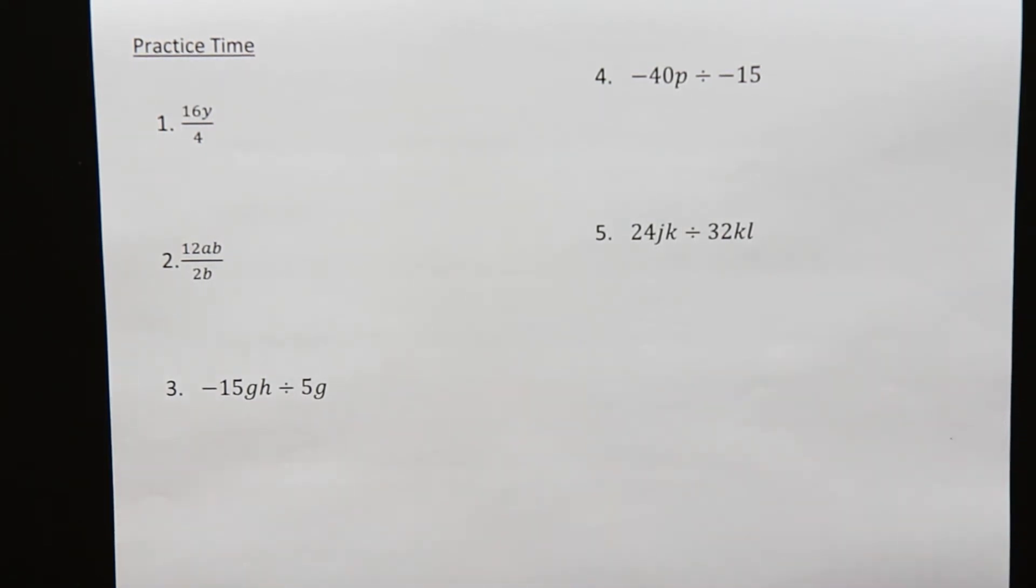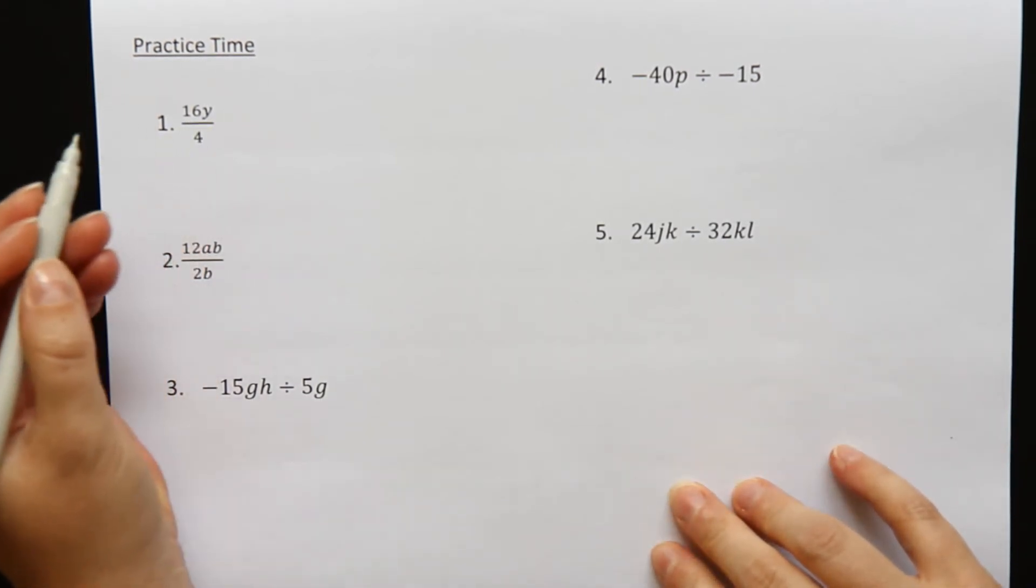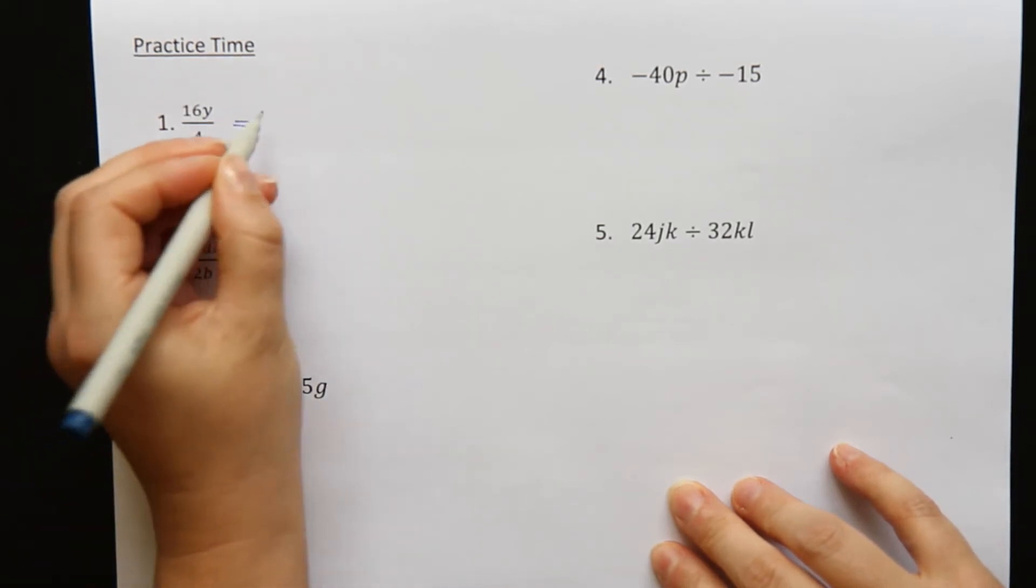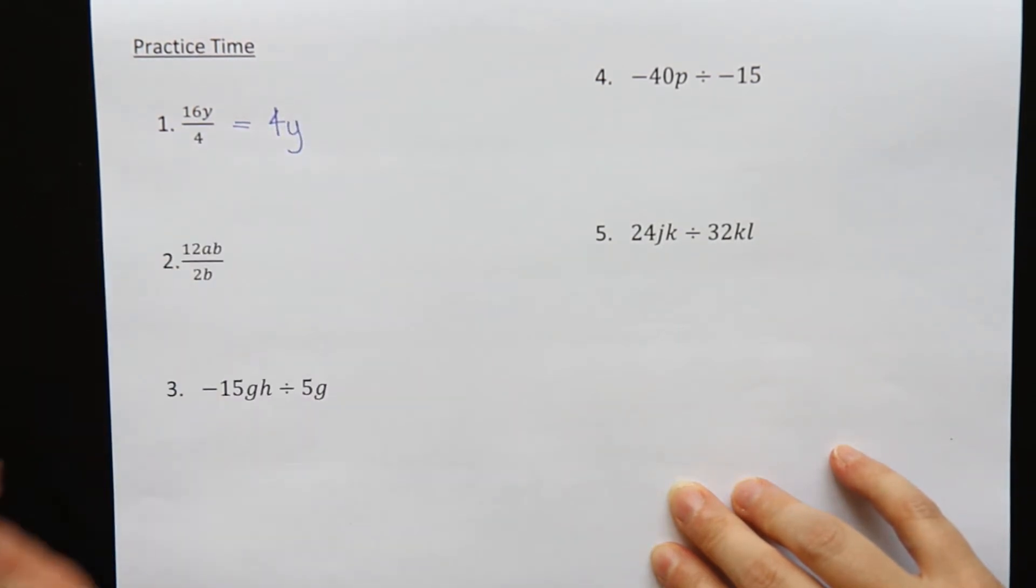Question one. 16y over 4 or divided by 4. We can divide 16 by 4. 16 divide by 4 is 4. And there's only one y. So 4y.